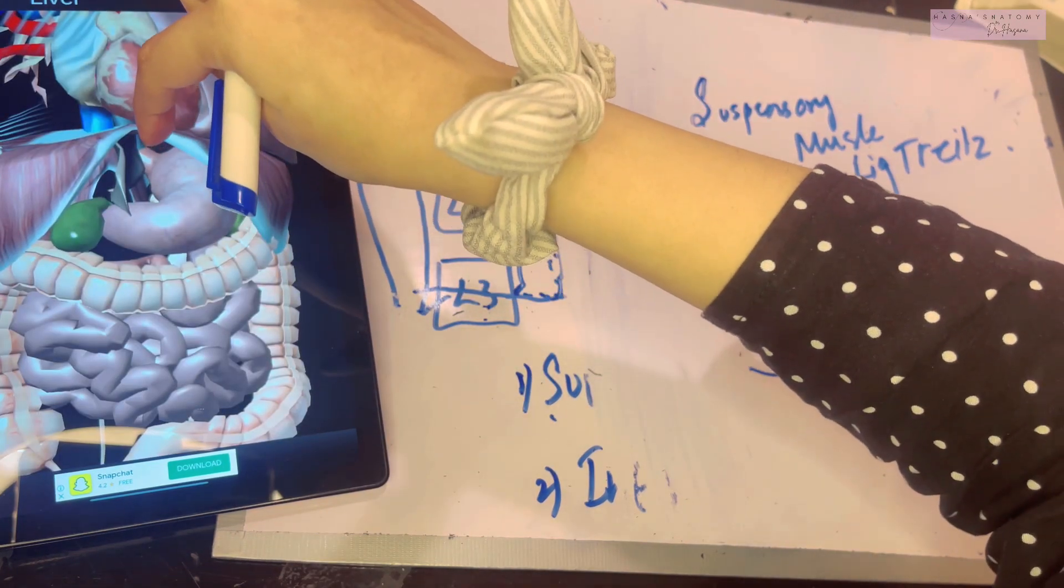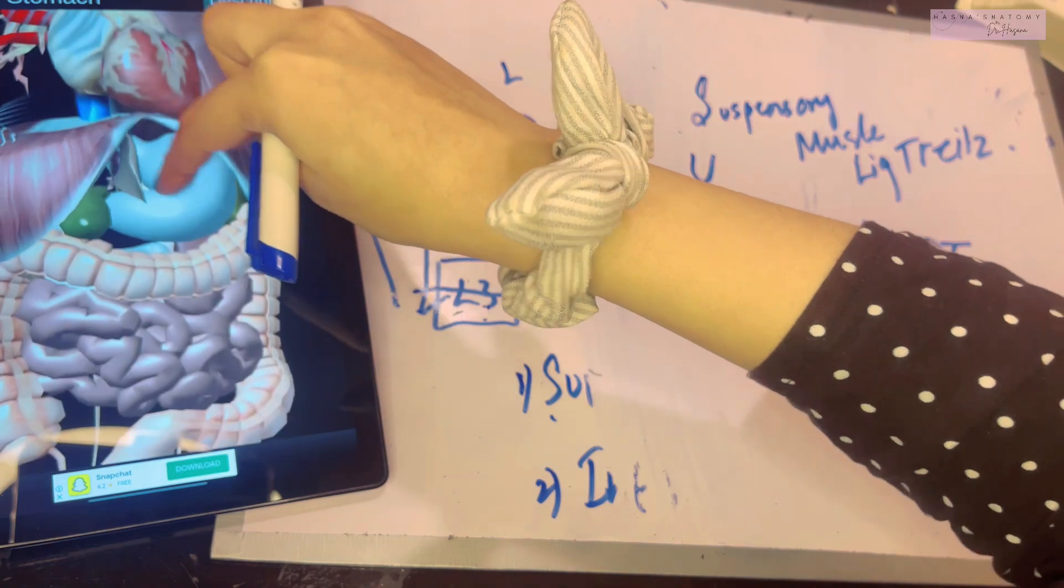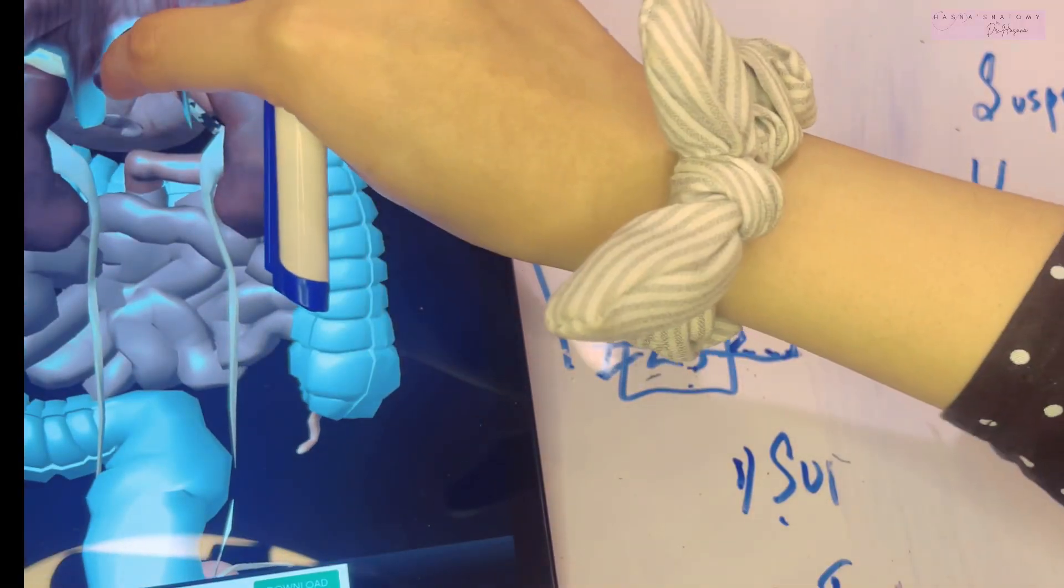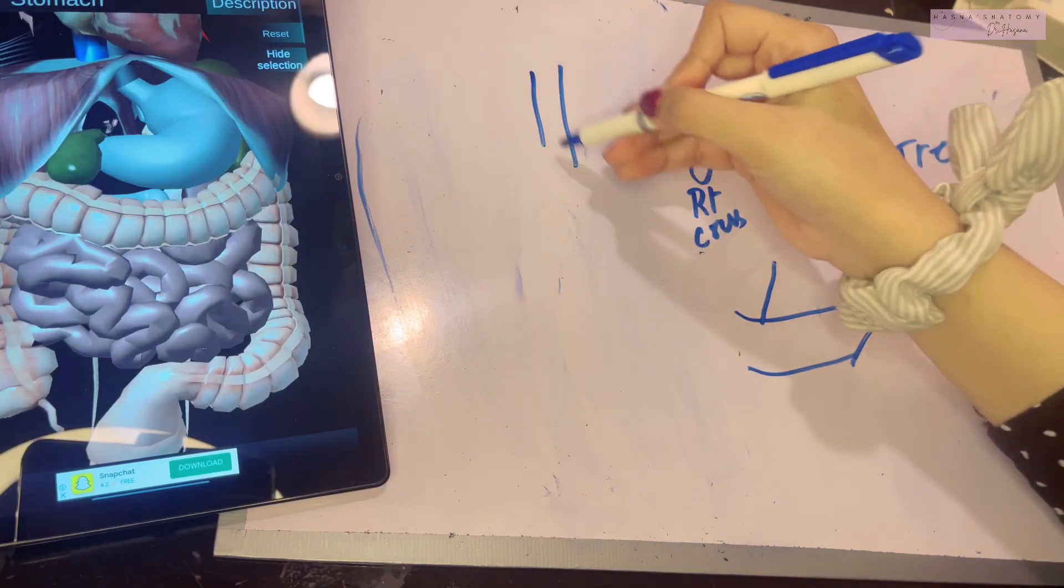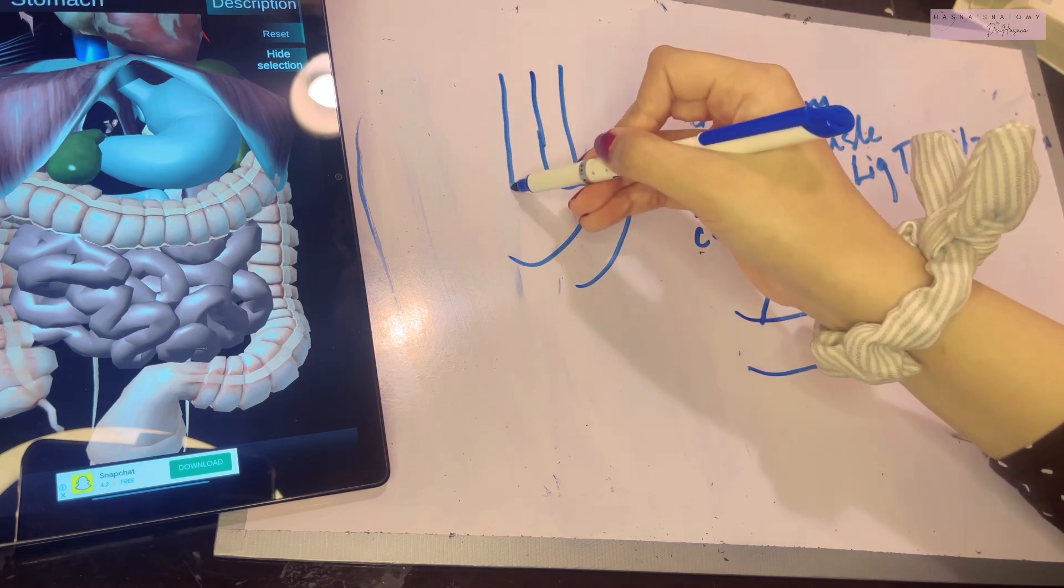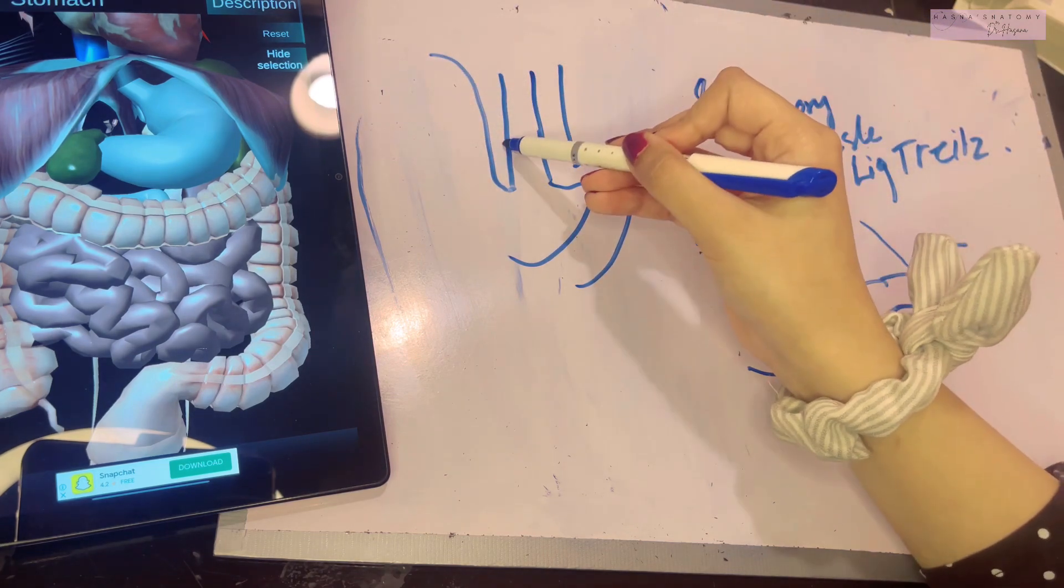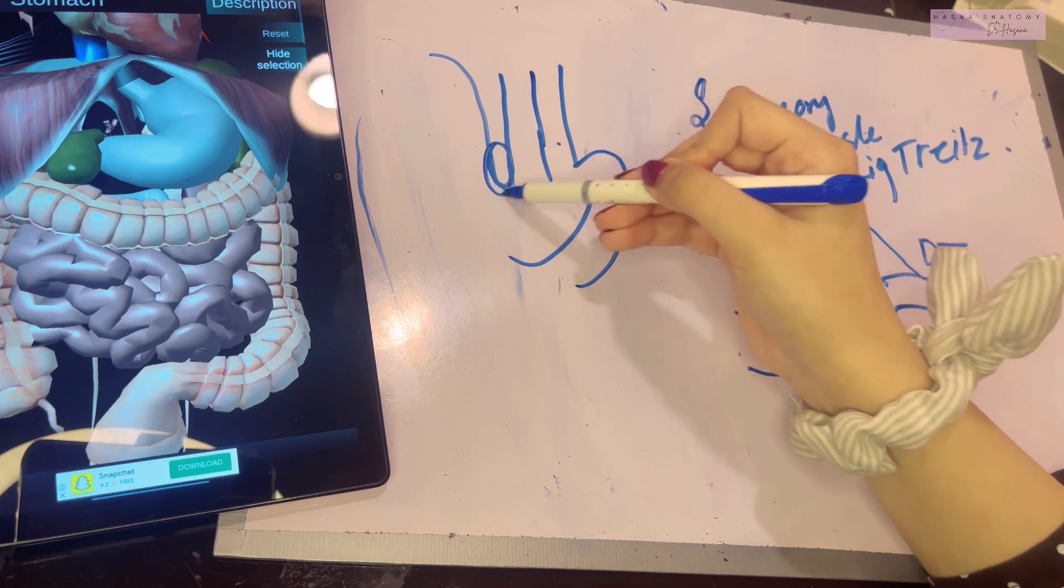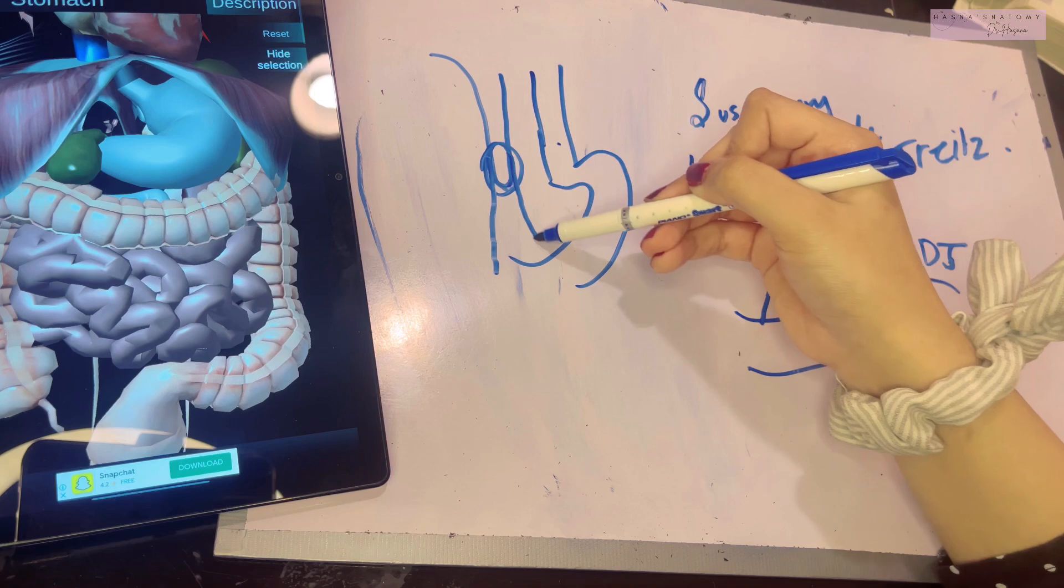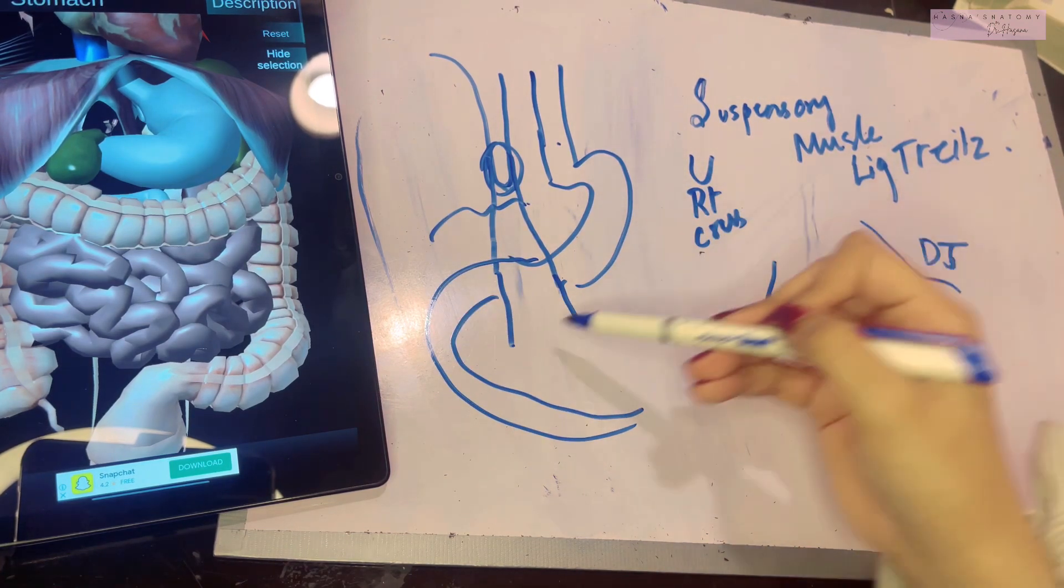From the right crus of the diaphragm, all the way from there, this band goes down, and it arises to the right side of esophagus. The right crus of diaphragm, you can see this is the esophagus, and then your stomach begins. And right behind this part, the right crus of diaphragm is lying. From the right side of the esophagus, originating from the right crus of the diaphragm, this ligament runs downwards, all the way down.